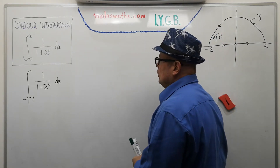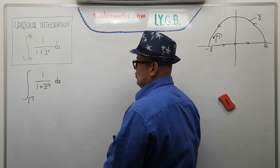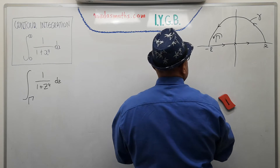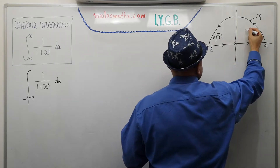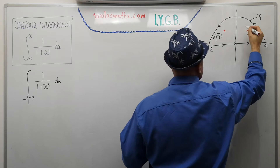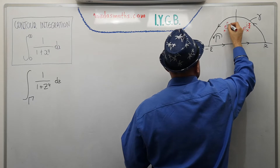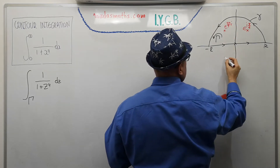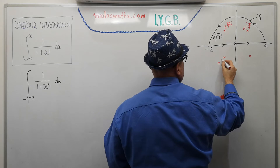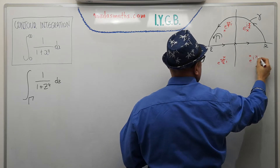First of all, we need to solve the equation z⁴ + 1 = 0. There are going to be four poles in total — the fourth roots of unity. They are at e^(iπ/4), e^(i3π/4), e^(i5π/4), and e^(i7π/4), equally spaced at 45 degrees, every 90 degrees around the circle.